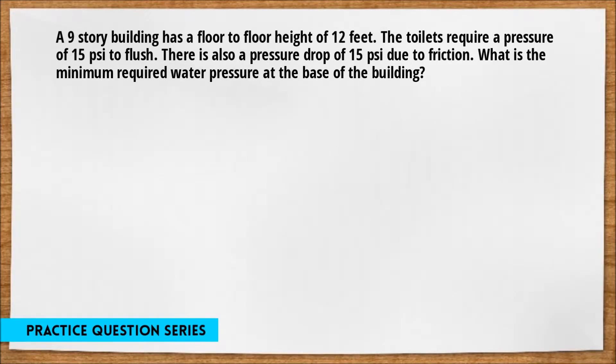A nine-story building has a floor-to-floor height of 12 feet. The toilets require a pressure of 15 psi to flush. There's also a pressure drop of 15 psi due to friction. What's the minimum required water pressure at the base of the building?